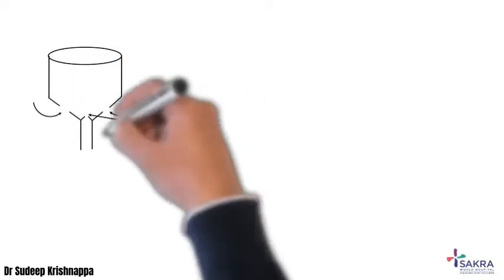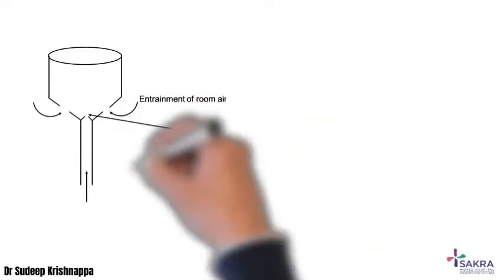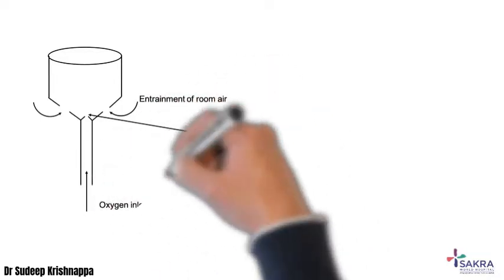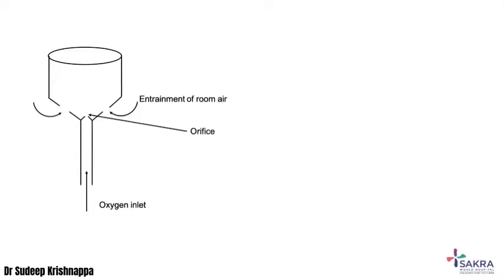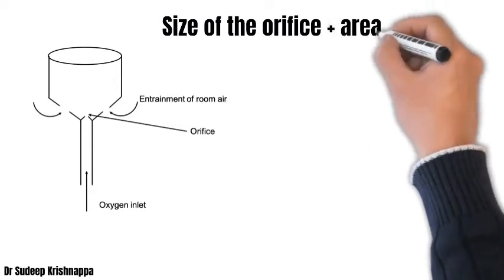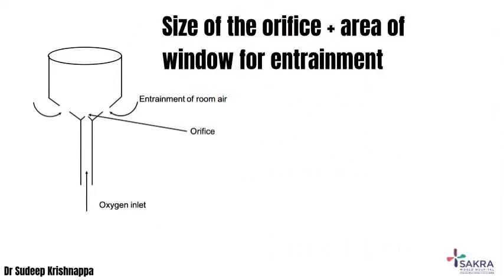This is what is essentially used in the design and functioning of a venturi device. We let the oxygen flow through a tubing, and by introducing a constriction or an orifice, we increase the velocity of flow of oxygen, thereby increasing the kinetic energy of the system. In order to obey the law of conservation of energy, the potential energy of the system drops, thereby creating a sub-atmospheric pressure. By providing openings on the venturi device at the point of the orifice, we allow atmospheric air to be entrained into the device.